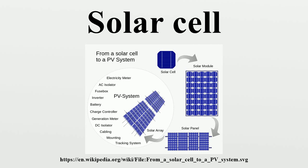The solar cell works in several steps. Photons in sunlight hit the solar panel and are absorbed by semiconducting materials, such as silicon. Electrons and protons are excited from their current molecular and atomic orbitals. Once excited, an electron can either dissipate the energy as heat and return to its orbital, or travel through the cell until it reaches an electrode. Current flows through the material to cancel the potential and this electricity is captured. The chemical bonds of the material are vital for this process to work, and usually silicon is used in two layers — one layer bonded with boron, the other phosphorus. These layers have different chemical electric charges and subsequently both drive and direct the current of electrons. An array of solar cells converts solar energy into a usable amount of direct current electricity. An inverter can convert the power to alternating current.